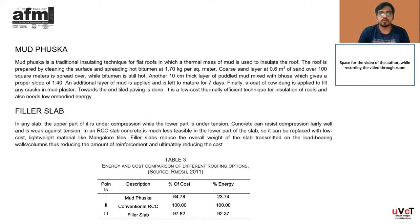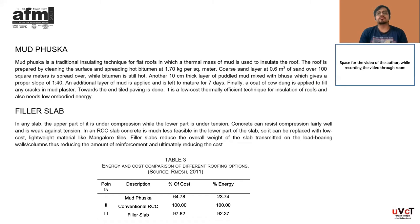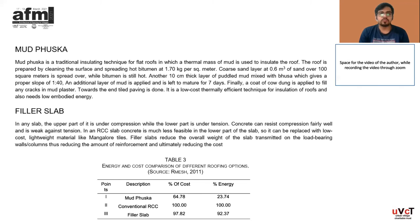Mud Fusca is a traditional insulating technique for flat roofs in which a thermal mass of mud is used to insulate the roof. The roof is prepared by cleaning the surface and spreading hot bitumen at 1.7 kg per square meter. A coarse sand layer of 0.6 cubic meters of sand over 100 square meters is spread while bitumen is still hot. Another 10 cm thick layer of paddled mud mixed with dhousa is applied, which gives a proper slope of 1:40. An additional layer of mud is applied and left to mature for 7 days. Finally, a coat of cow dung is applied to fill any cracks in the mud plaster. Tile paving is done towards the end. It is a low cost, thermally efficient technique for roof insulation and requires low embodied energy.